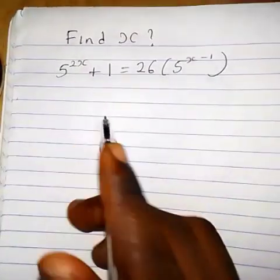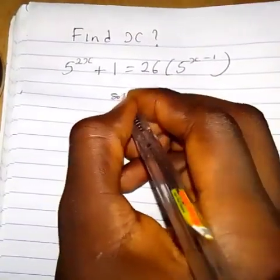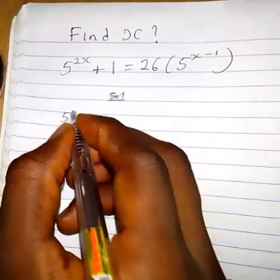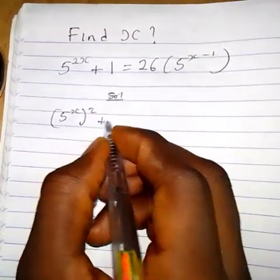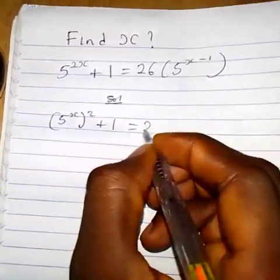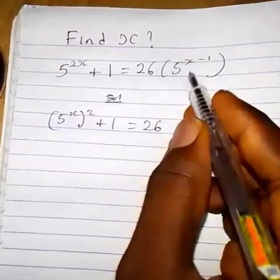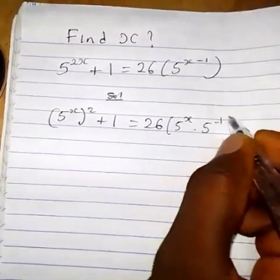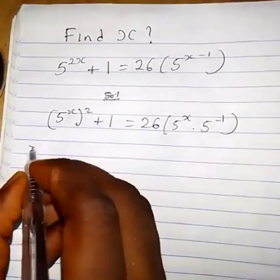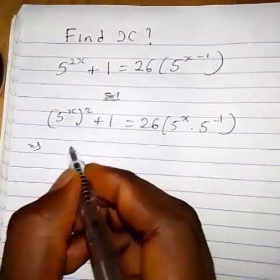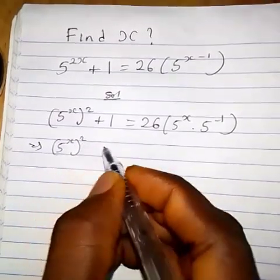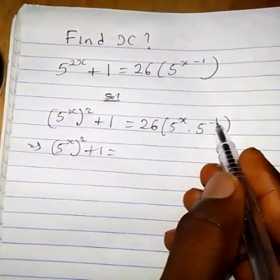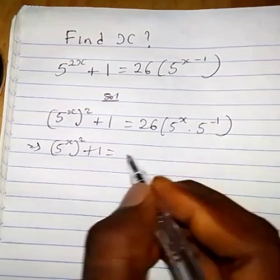How do we find the value of s in this equation? We have 5 raised to the power 2s, which can be written as 5 raised to the power s times 2 plus 1, which equals 26. This can also be written as 5 raised to the power s times 5 raised to the power minus 1.